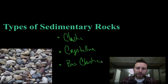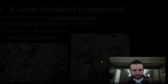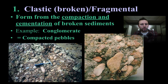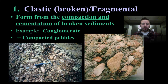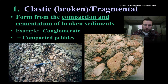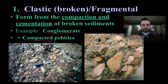We're going to take a look at each one of these a little more closely. Our first type is clastic or fragmental sedimentary rocks. These form from the compaction and cementation of sediments or weathered material. A very typical example would be conglomerate, which is nothing more than compacted pebbles.